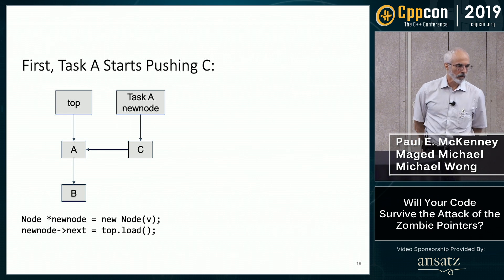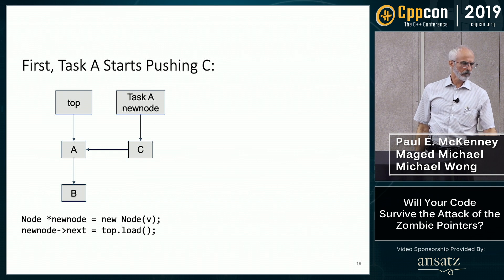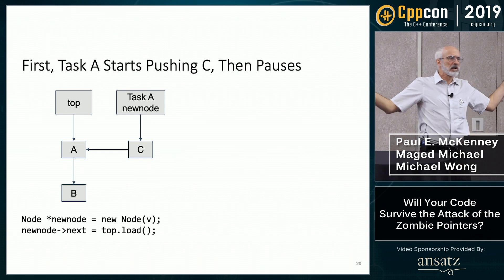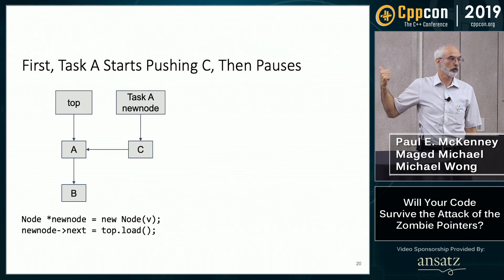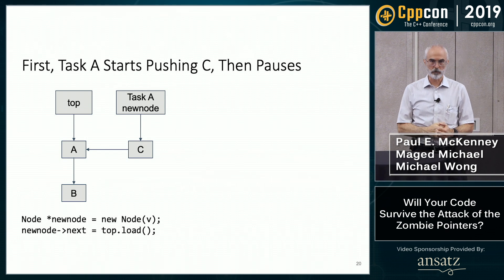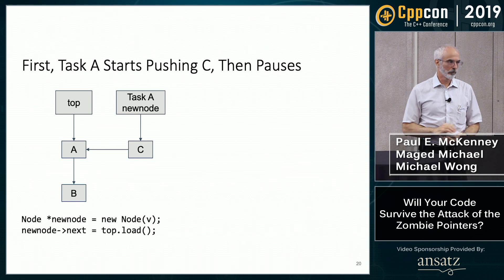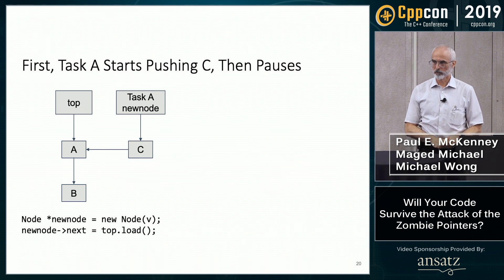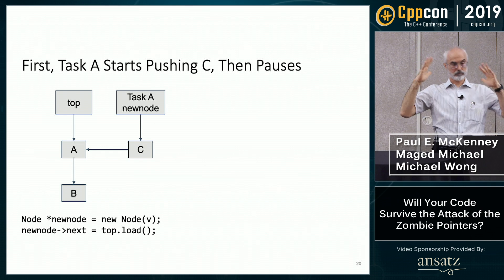Task A starts its push: allocates, initializes, gets the next pointer set up — and then it gets stuck. Maybe there's an interrupt, maybe it's in a guest OS and the vCPU gets preempted. In any case, it's stuck there for a while — no fault of its own. Computers can do that at any time for any reason. Never assume any kind of common speed or limitation on speed for user code or even kernel code. You will get bitten.